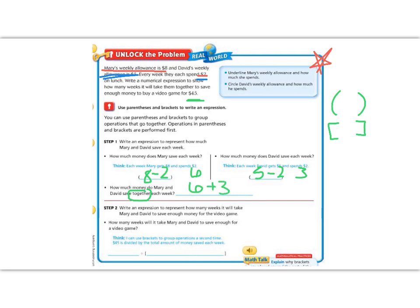Step 2. Write an expression to represent how many weeks it will take Mary and David to save enough money for the video game. Well, they need to have $45, and we're going to divide it by how much money they make. And we're actually going to use the numbers that we started off with in our parentheses to write our numerical expression.